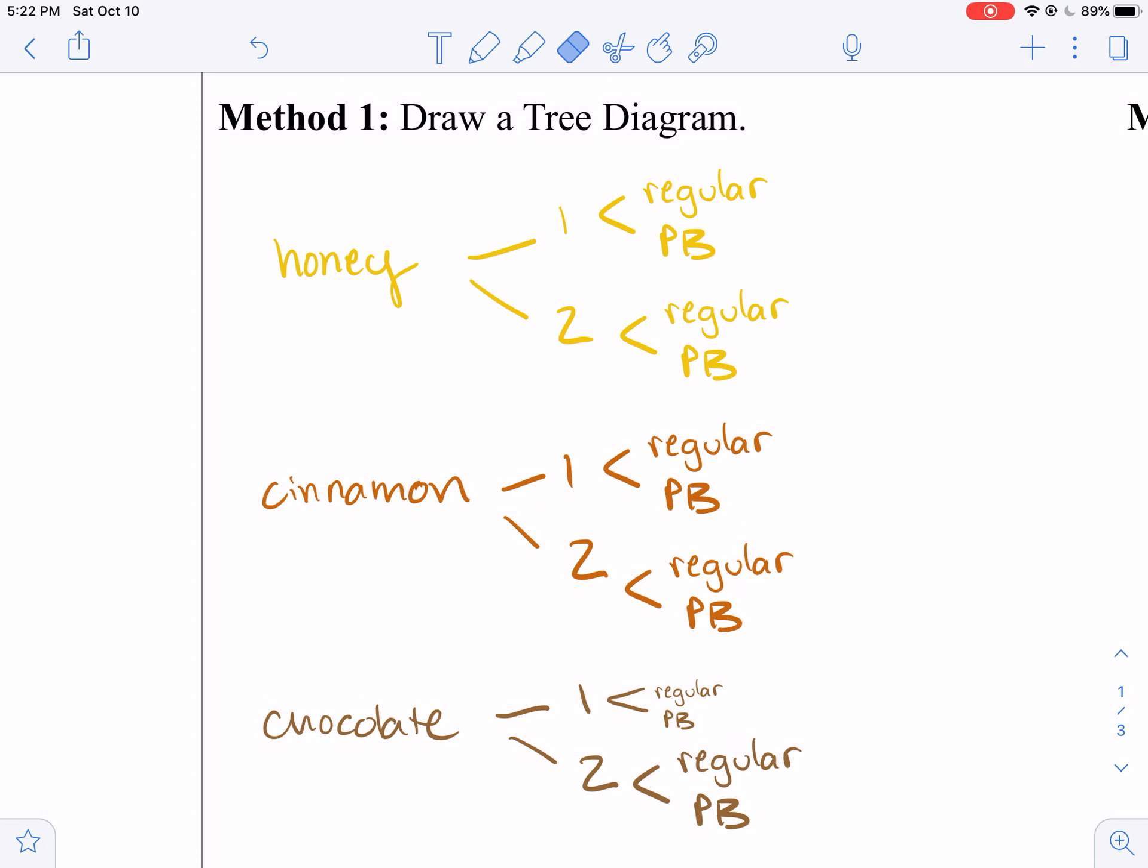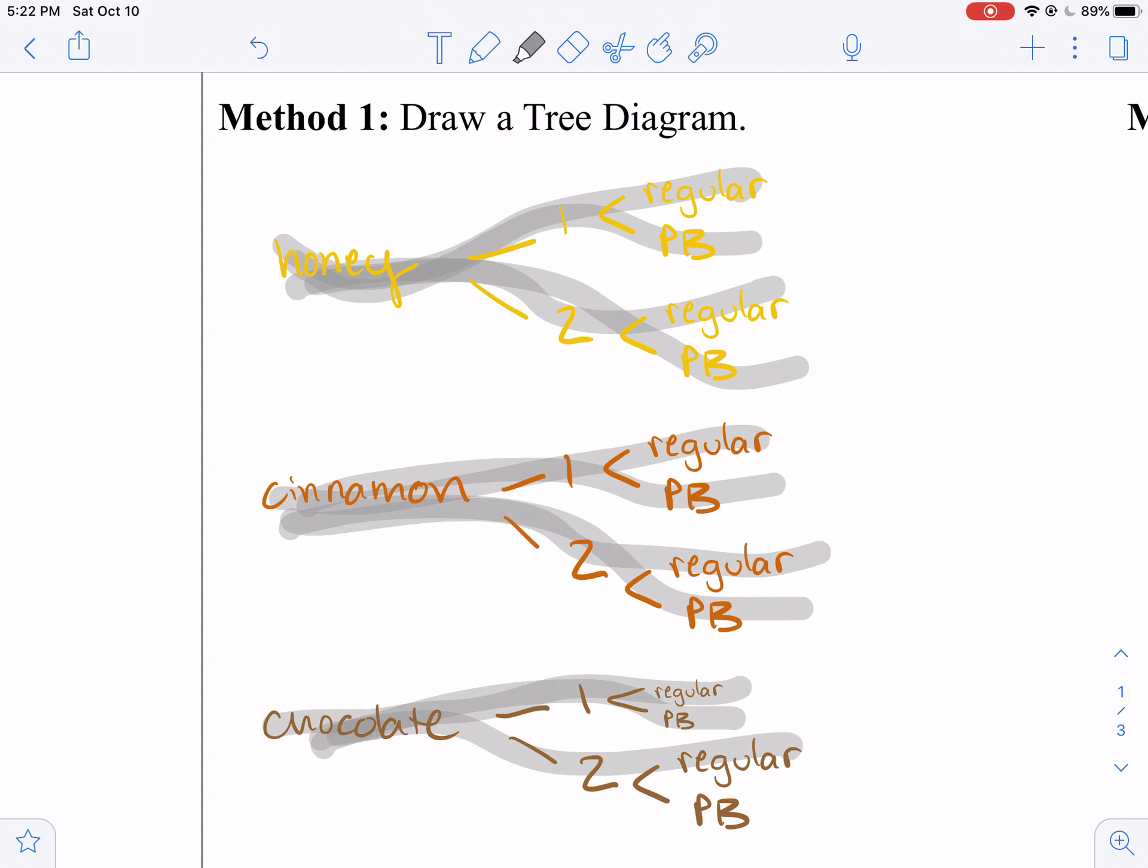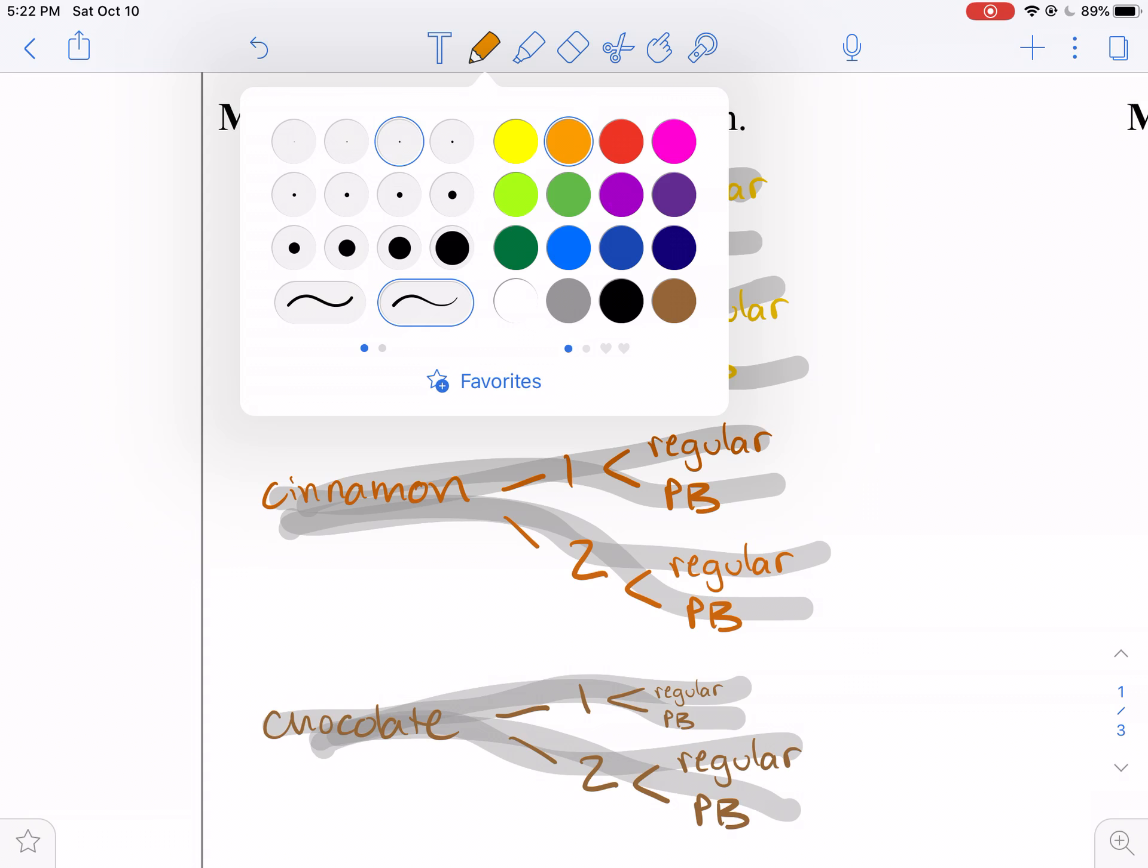For those of you who did not make s'more or got one and came back, there are two ways that you can count the number of s'more possibilities. One, you can make a tree diagram, which takes a lot of time and a lot of space. And I'm not going to make you do that. I just showed you what it looks like. So we have 12 options of s'mores.